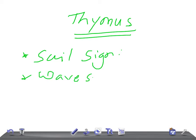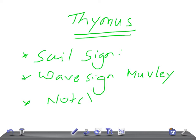Then we have another one: that's the wave sign of Mole — that's the indentation on a soft thymus due to the ribs. And the other is the notch sign. Just type 'wave sign of Mole' in Google and look at the images.